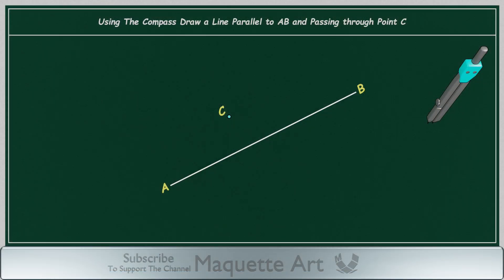In this video, I will explain how to draw a line parallel to AB and passing through point C using Compass.